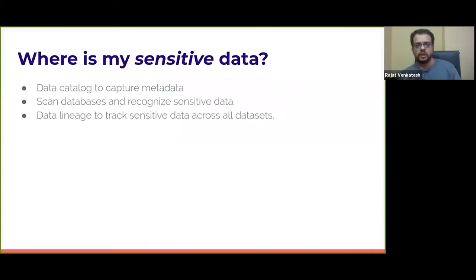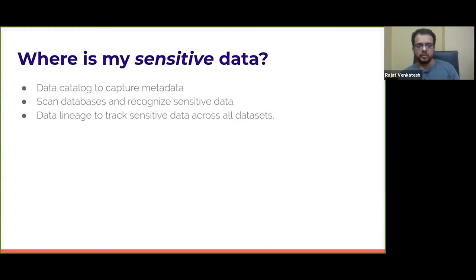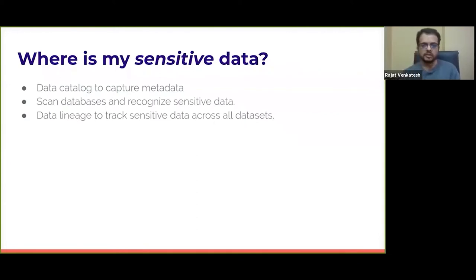So what you really care about is: where is my sensitive data, who has access to sensitive data, and how is the sensitive data being used? To understand where sensitive data is, you need three capabilities. You need a data catalog where you can store metadata about your datasets — what are the tables, what columns do they have, what are the data types, what kind of data do you store. You need the ability to scan your database and recognize sensitive data, and tag the catalog to identify which is sensitive and which is not.